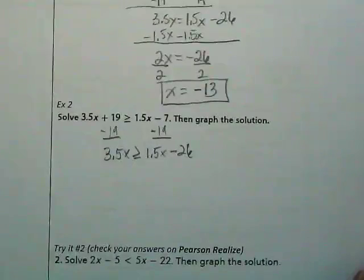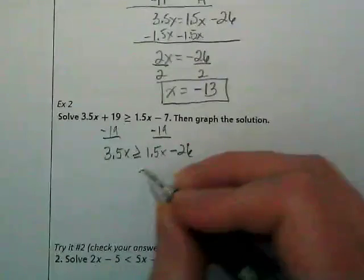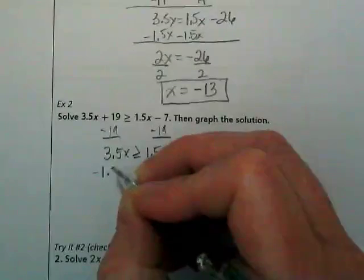What's our next step then? We want to get the x's together, so we're going to subtract 1.5x and get it to the left side of this inequality.